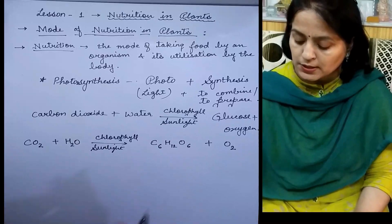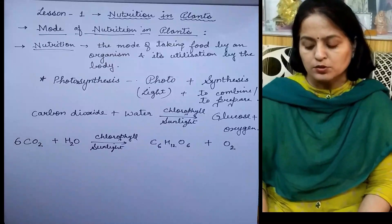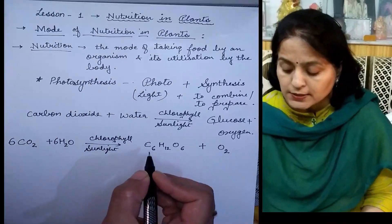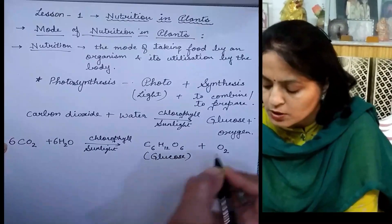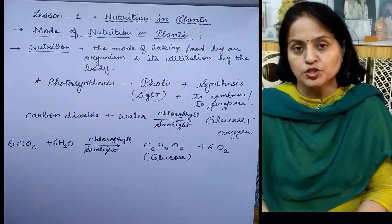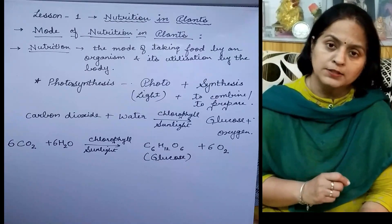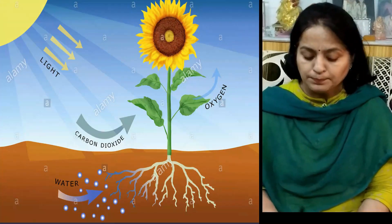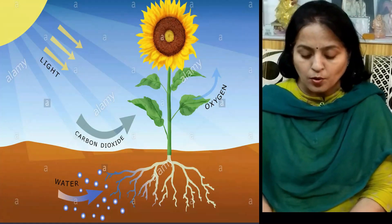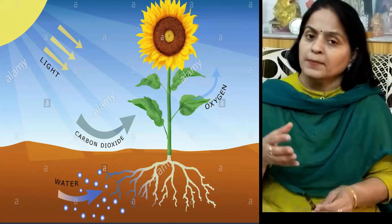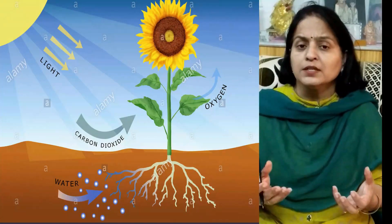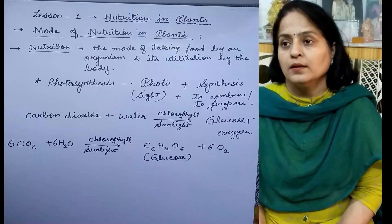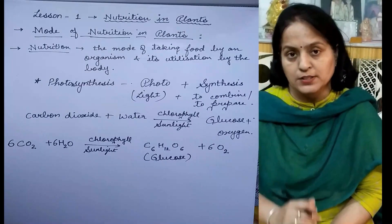To balance this equation, six molecules of carbon dioxide add with six molecules of water in the presence of chlorophyll and sunlight to give one molecule of glucose and six molecules of oxygen. This process is equally important for both plants and animals: plants get food and animals get oxygen as well as food. Plants use water, carbon dioxide, minerals, sunlight, and chlorophyll — water and minerals come through the soil, and carbon dioxide and sunlight are present in the atmosphere.